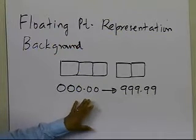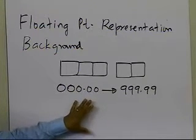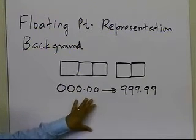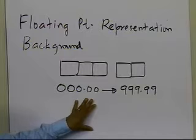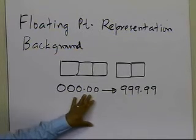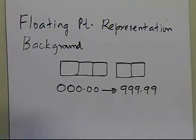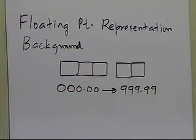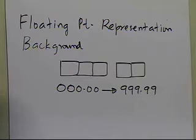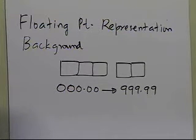However, the relative true errors are large for small numbers and small for large numbers. And what we want to do is see if there's a mechanism by which I can have the same amount of relative true errors, or relative round-off errors, whether I have small numbers or large numbers.